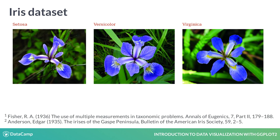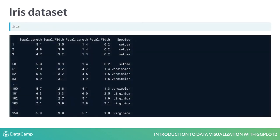You're probably familiar with petals — they're the colorful part of a flower. Sepals are the outer leaves of the flower; they are typically green, but in this case they're also colorful. There are 50 specimens in each species. The data is stored in an object called iris. There are five variables: the species and one for each of the properties which were measured.